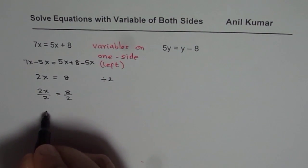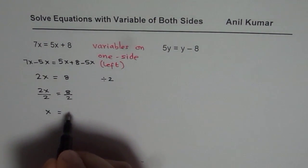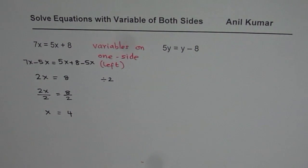Now when you divide 2x by 2 you are left with x. 8 divided by 2 is 4. So that becomes your answer.